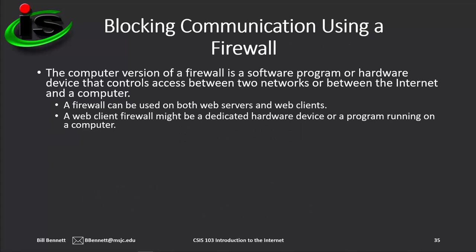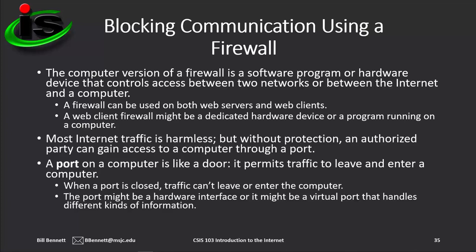Like its counterpart in the physical world — which acts as a barrier to keep a fire from spreading from one area of a building to another — the electronic version of a firewall is an app or hardware device that controls access between two networks, such as a local area network and the internet, or between the internet and a device. Firewalls can be used on both web servers and web clients. A web client firewall might be a dedicated hardware device or an app running on the computer. When a computer is connected to the internet, it receives traffic from other computers without its user even realizing it. Without protection, an unauthorized party can gain access to a computer through a port. A port on a computer is like a door — it permits traffic to leave and enter a computer. When the port is closed, traffic can't leave or enter.